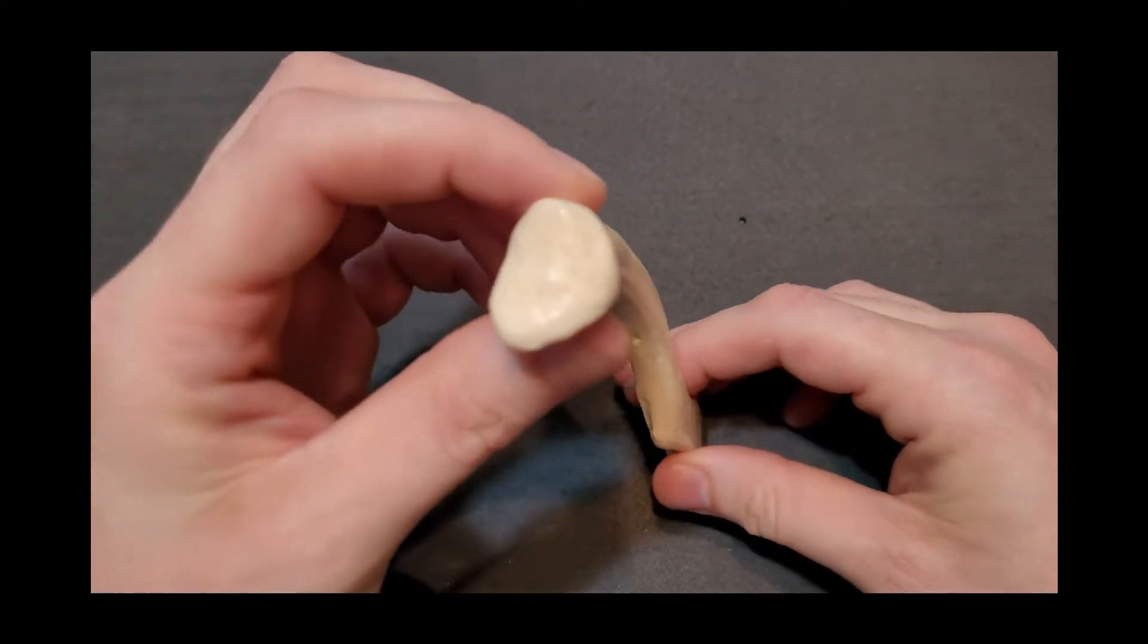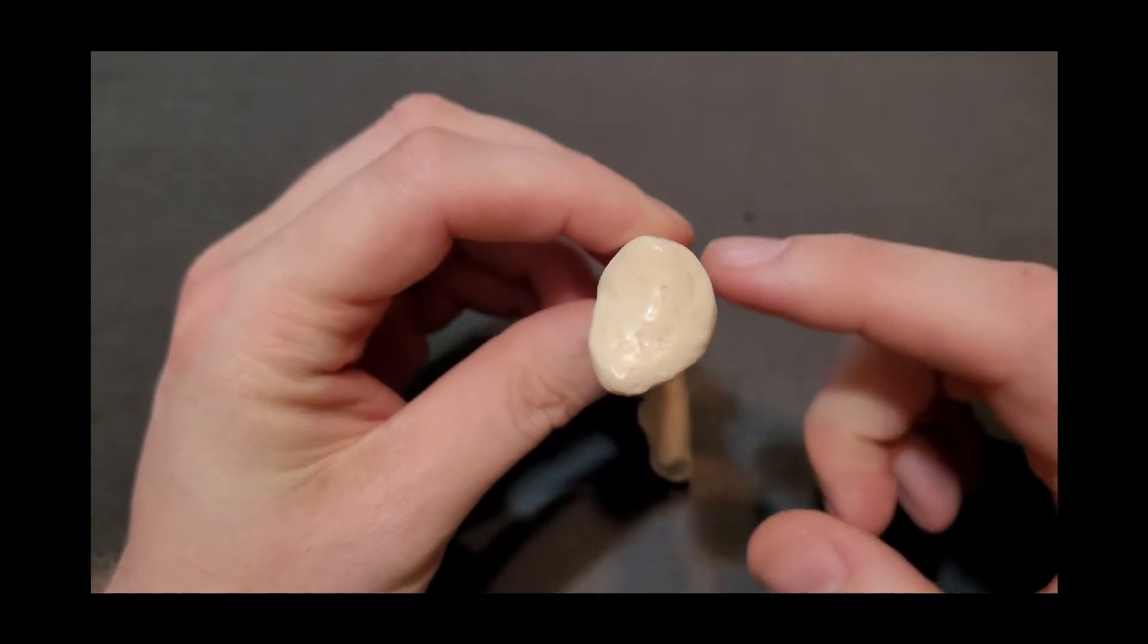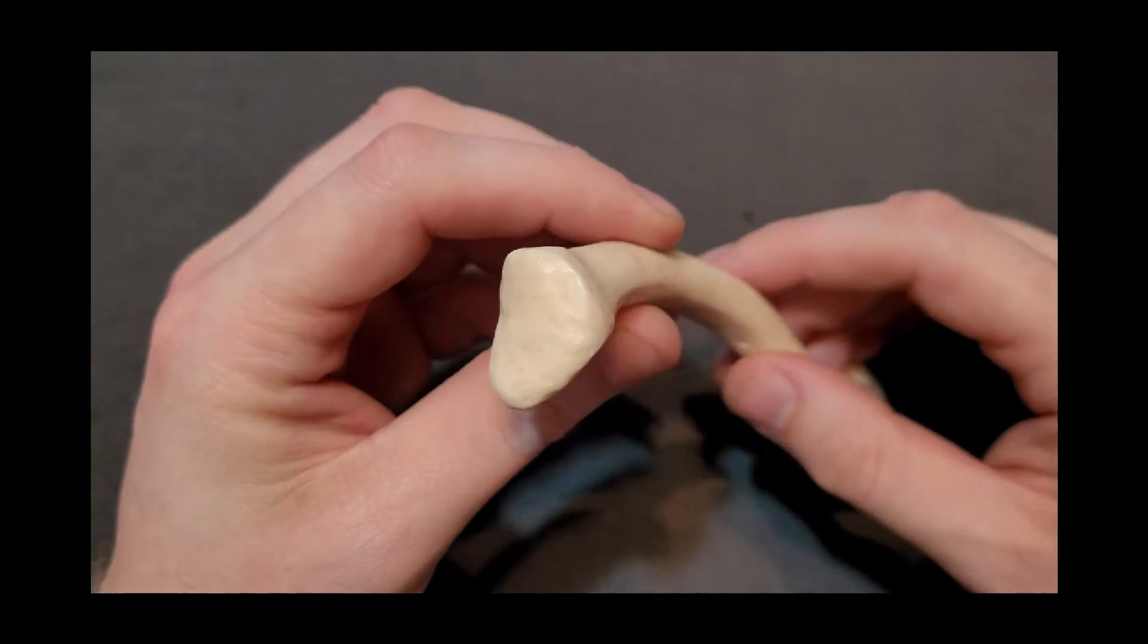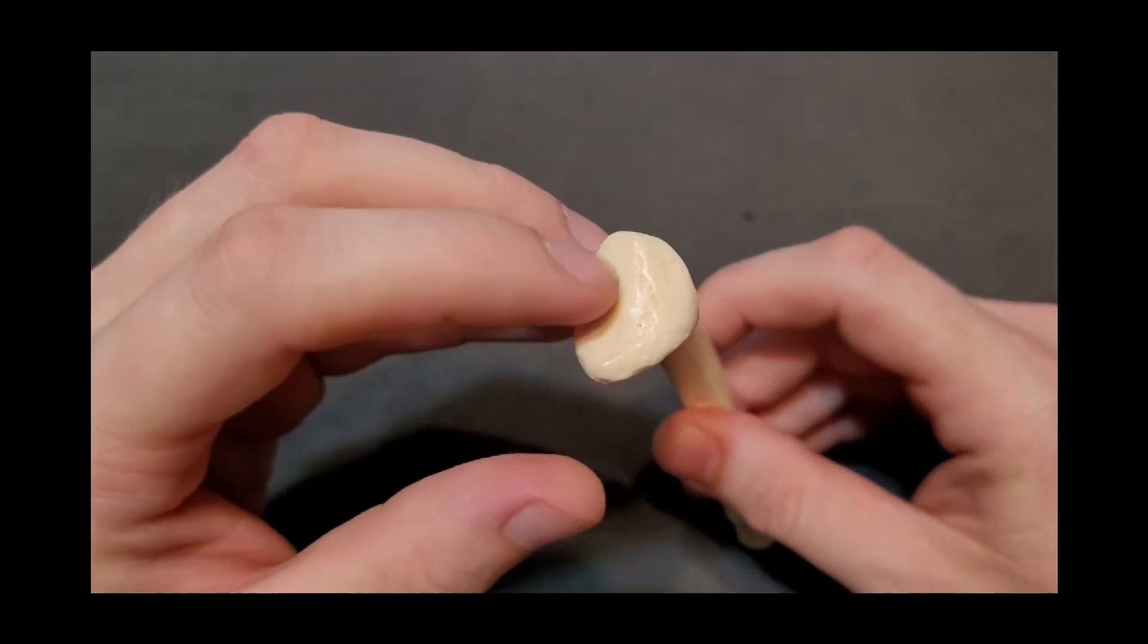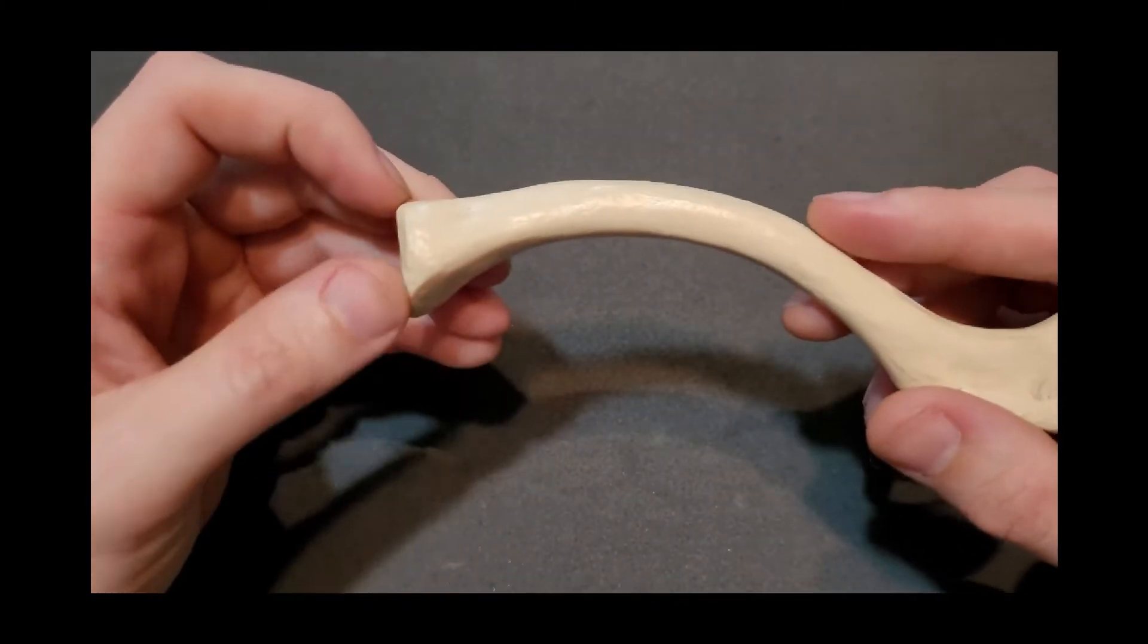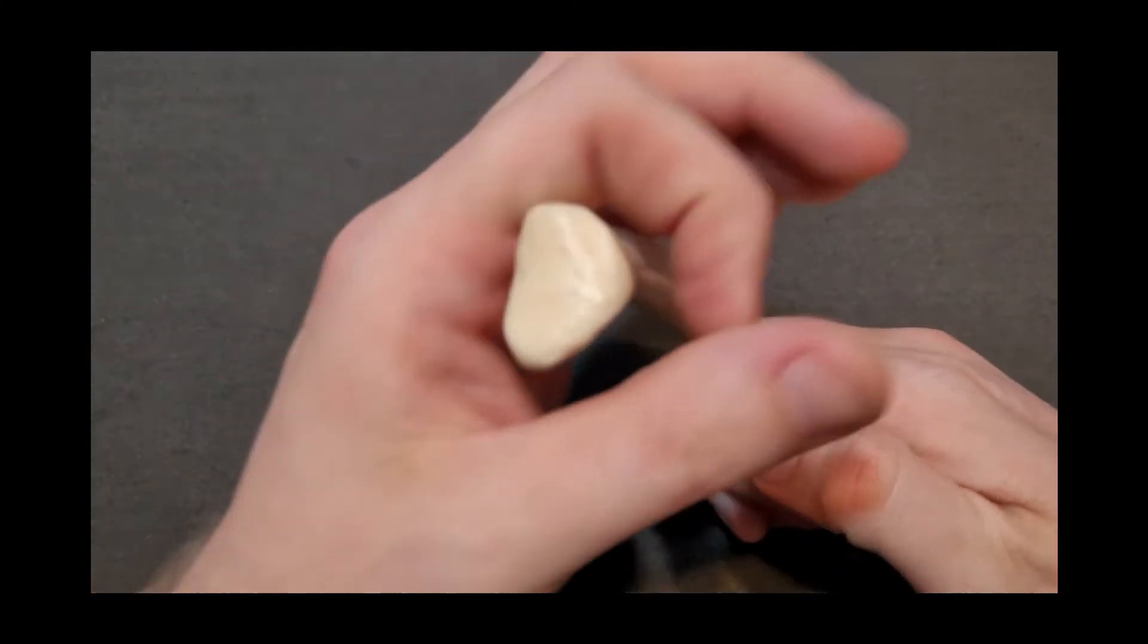The medial end which we're looking at right now has a nice almost circular or oval shape to it. This is your sternal end and this specifically is the articulation with your sternum or more specifically the manubrium. So that's what this end looks like.